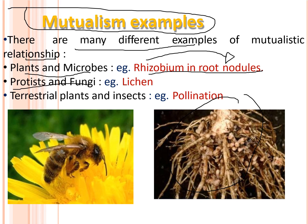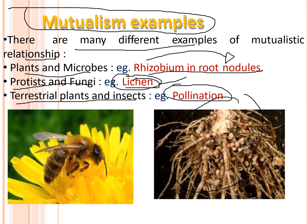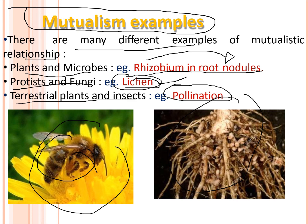Another example of mutualism is lichens — a combination of protists and fungi, forming a symbiotic organism. Lichens are one more example of mutualism. We also have terrestrial plants and insects in a mutualism relationship through pollination, where insects such as bees suck nectar and help in the pollination of particular plants.